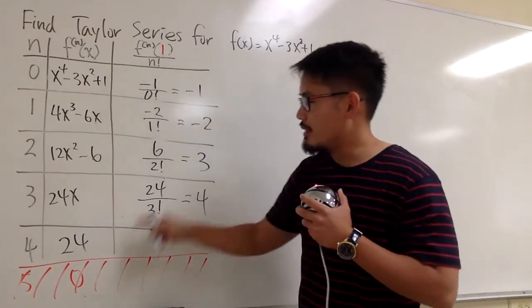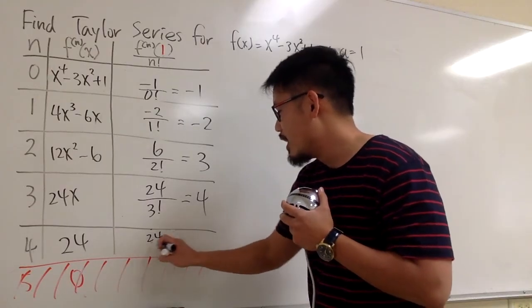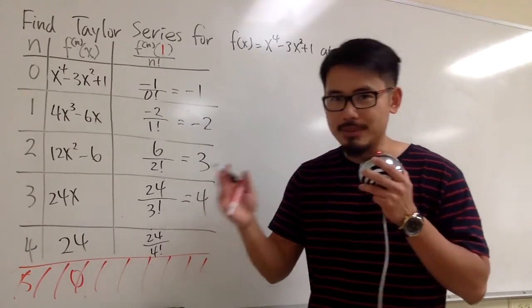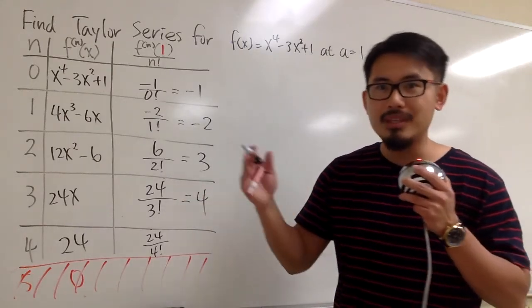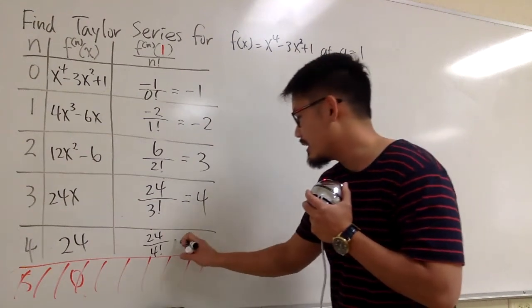Last one, plug in 1 into here, but there's no x, so we have just 24 anyways, over 4 factorial. 4 factorial means 4 times 3 times 2 times 1, which will be 24. So this is 24 over 24, so at the end we get 1.